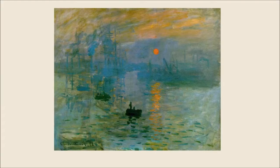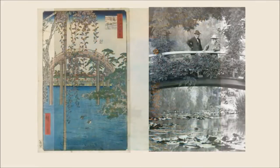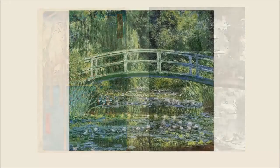Claude Monet was the founder of French Impressionist painting in the 1870s. He created a Japanese garden in Giverny, outside Paris, and he was inspired by a woodblock print by Ando Hiroshige from 1856. From his bridge he painted not lily pads, but light and shadows,